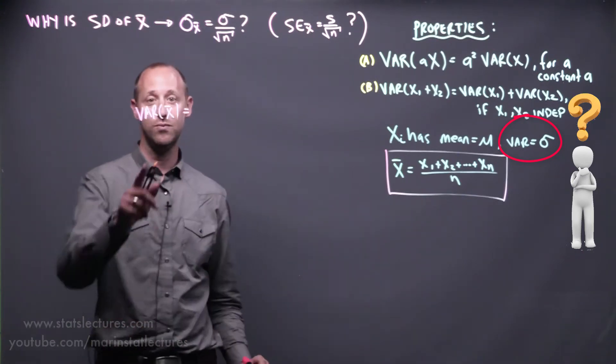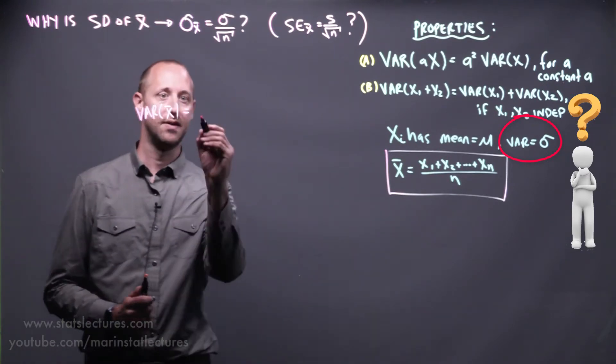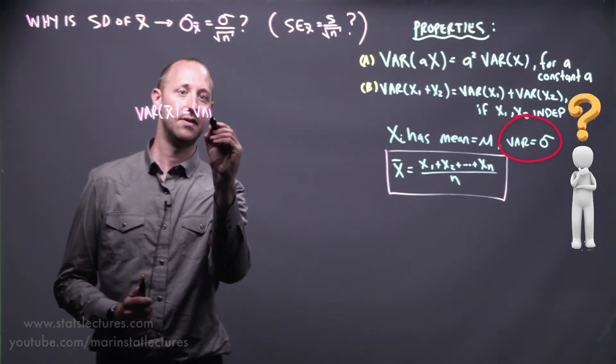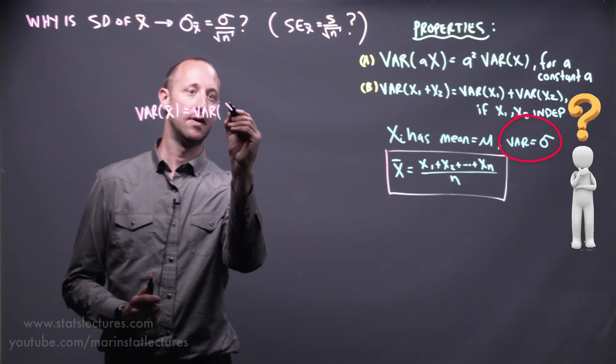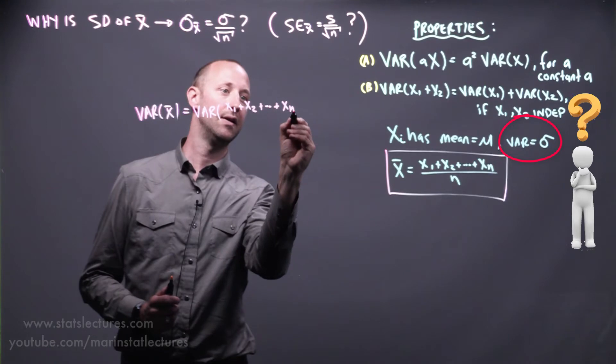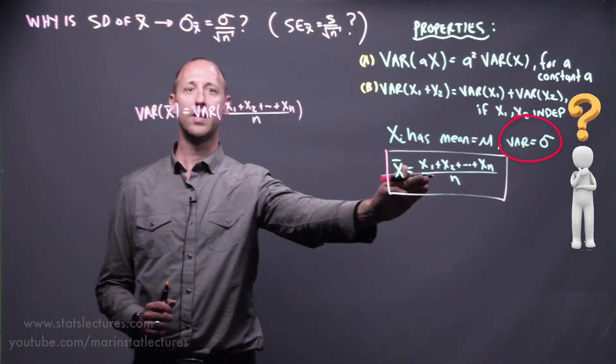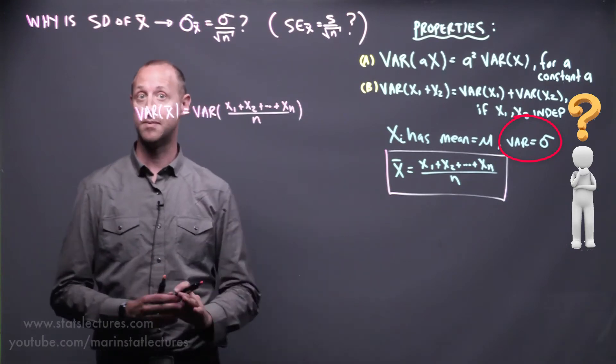So first let's write out what this is. The variance of the sample mean is the variance of x1 plus x2 all the way up to xn divided by n. So all I've done here is write in what is actually the sample mean.